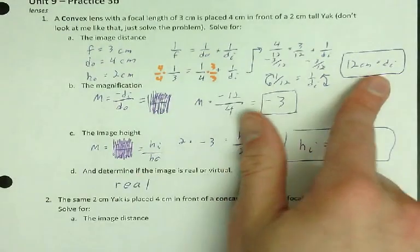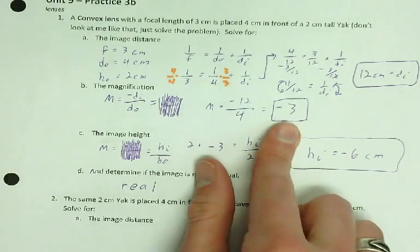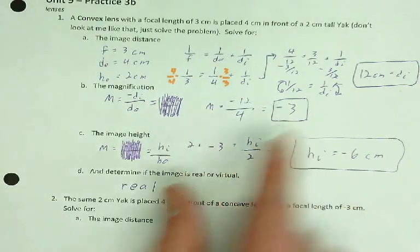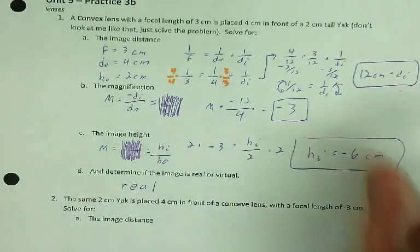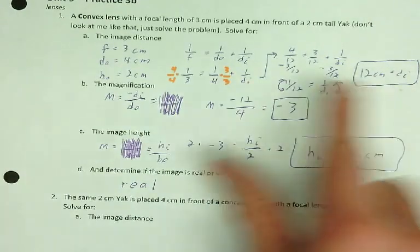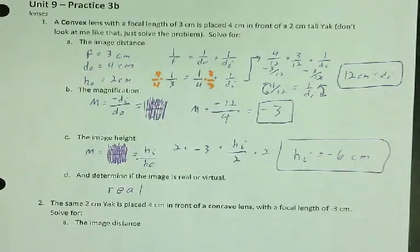So if you get a positive DI, magnification will always be negative. And that's just from the equation. The equation's got a negative built into it, so it'll always be opposite. So if this is negative, then this will be positive. They're always opposite signs of each other.